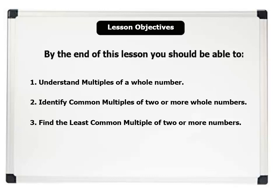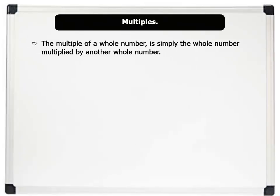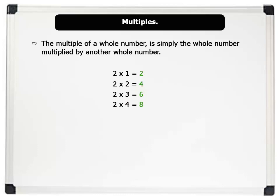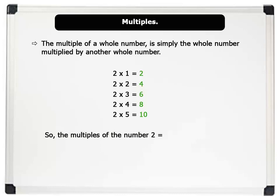The multiple of a whole number is simply the whole number multiplied by another whole number. For example: 2 times 1 equals 2, 2 times 2 equals 4, 2 times 3 equals 6, 2 times 4 equals 8, and 2 times 5 equals 10. Note, the colored numbers on the right are the multiples. So the multiples of the number 2 are 2, 4, 6, 8, and 10.